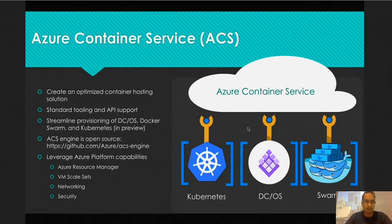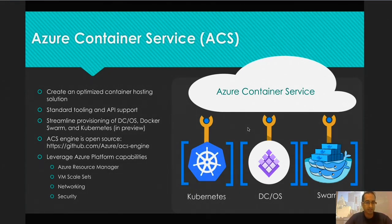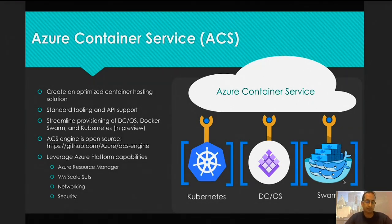Let's talk a little bit about the Container Service and what it does and how we are using that. The Container Service is basically not in itself a clustering platform — it's basically like a hosting service. It allows you to provision DCOS, Kubernetes, and swarm clusters and provide you that hosting option. If you wanted to save time on productivity, you can do that, because creating these clustering platforms and maintaining them takes time and resources, and you may want to offload that to a service like ACS.